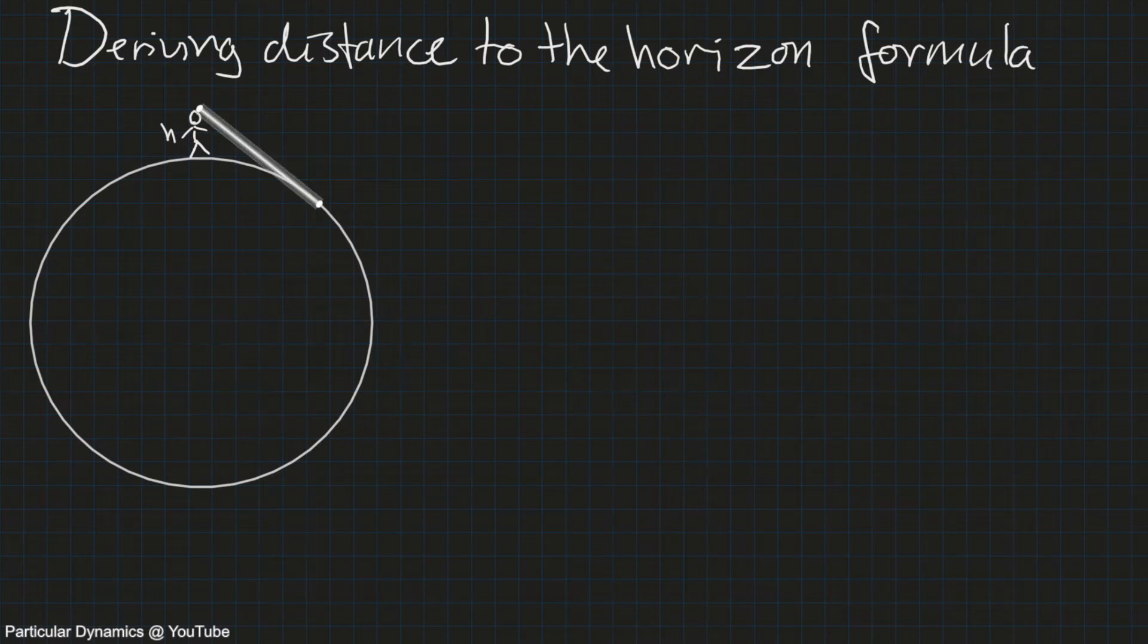And by horizon we mean the point at the surface of the earth where the line of sight is tangent to the surface.